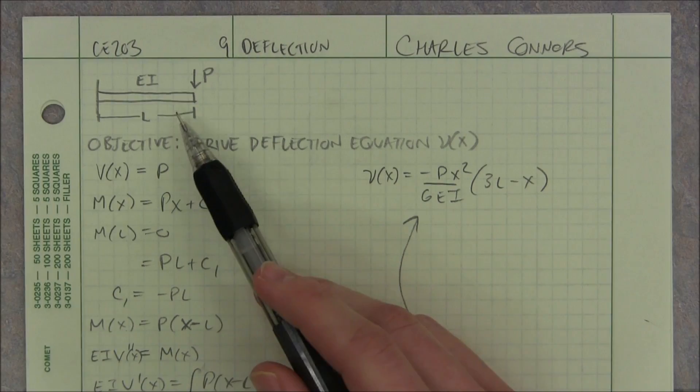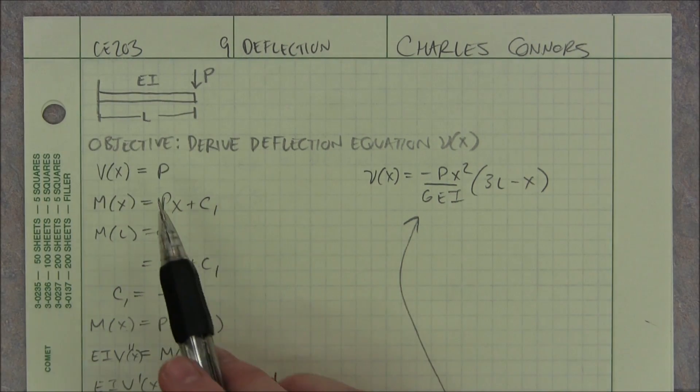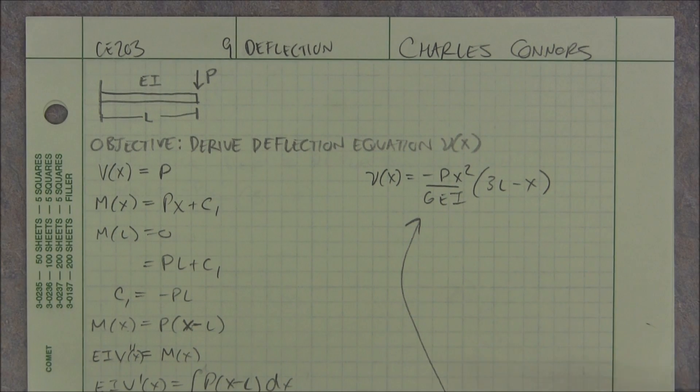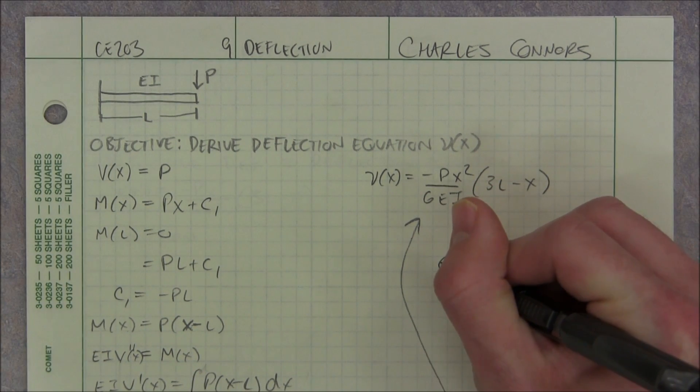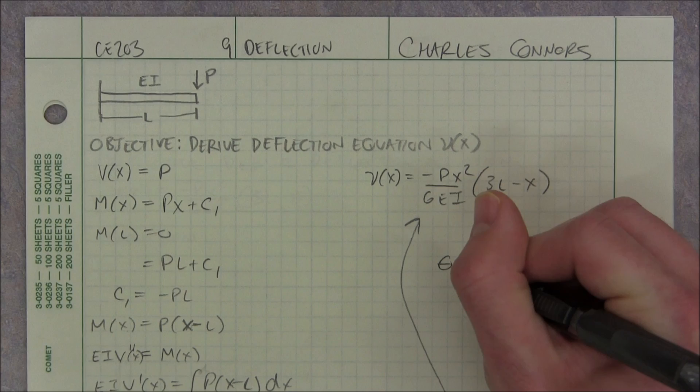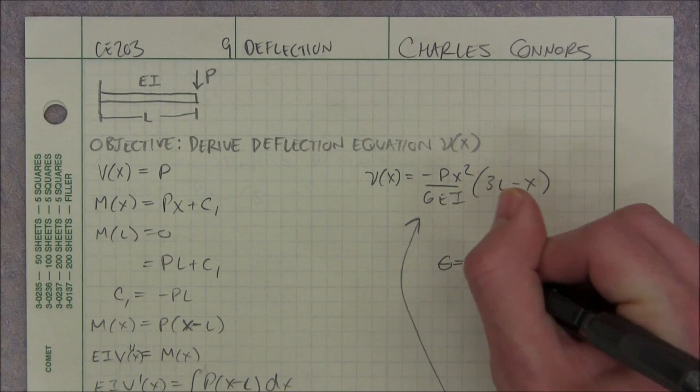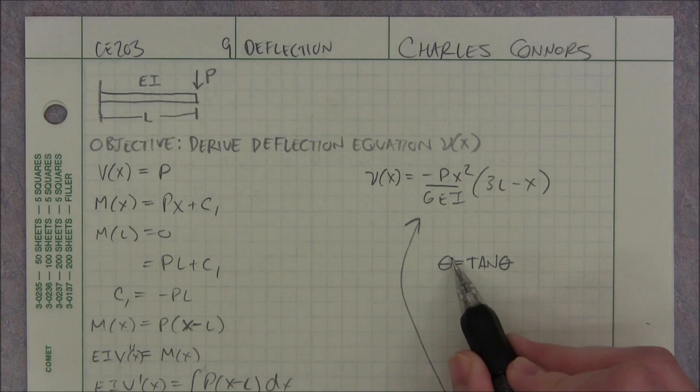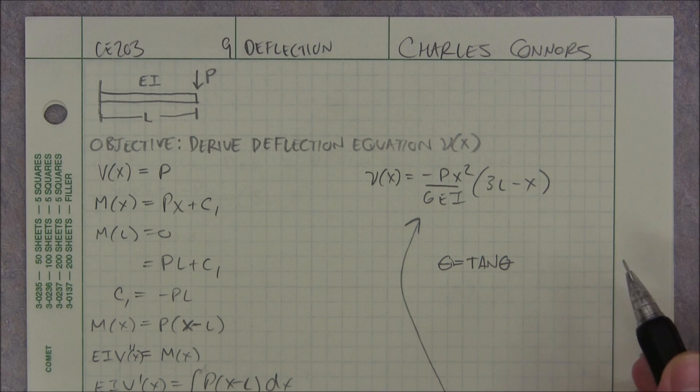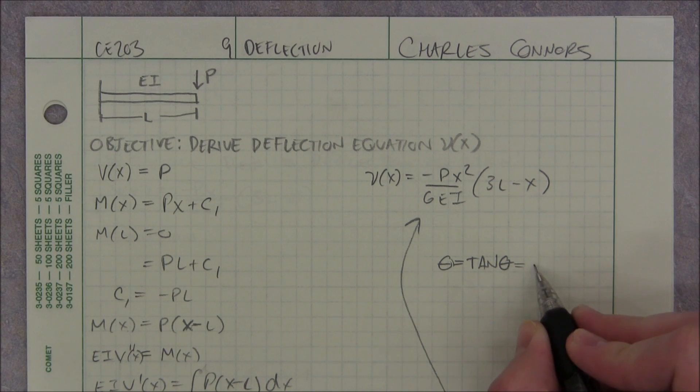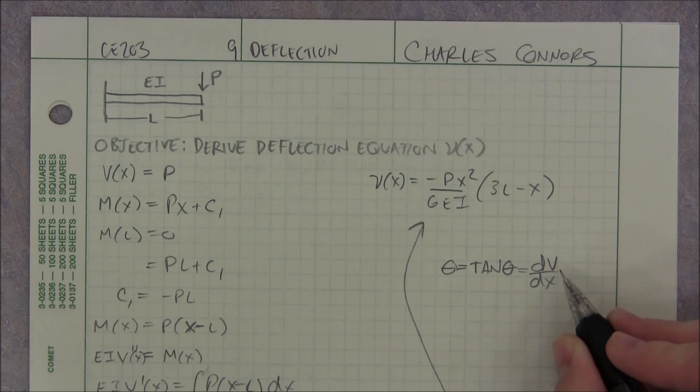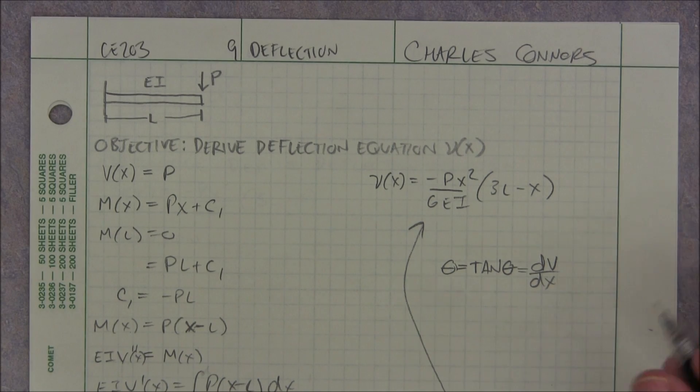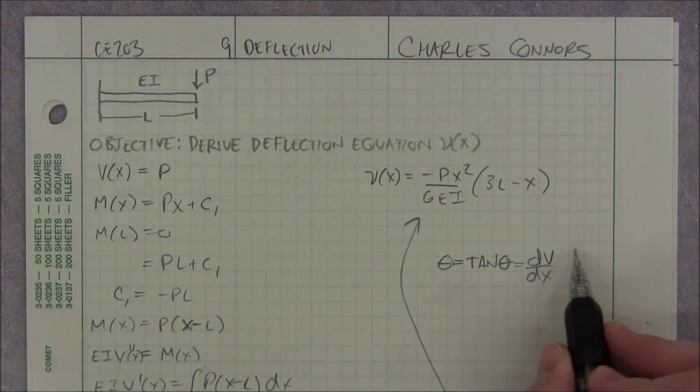Now we're talking about deflections. These deflection formulas are all based on the theory that we have small angle approximations. So if you're ever doing any of these problems, keep in mind that theta equals tangent of theta, which is the same thing as the slope or the change in deflection over your change in x. That's just slope, so keep that in mind as you do these problems.